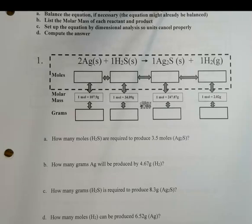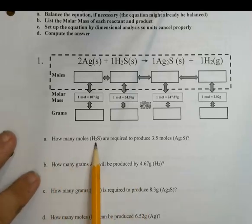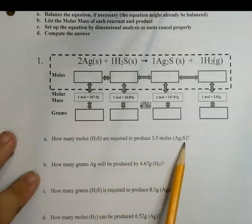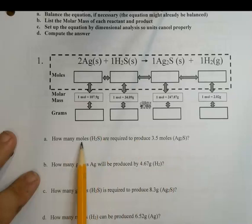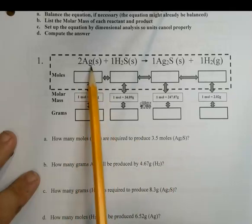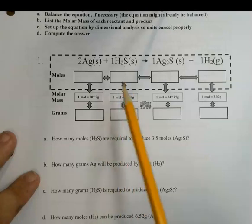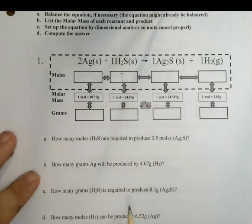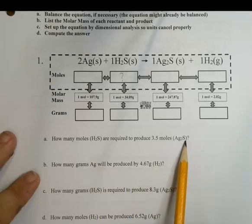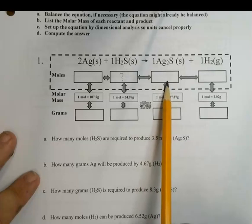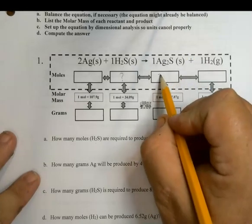So how do we solve these problems? You're going to start with two things: something the problem is asking you for, and an amount of something it gives you to start with. Let's read the first question: how many moles of H₂S are required to produce 3.5 moles of Ag₂S? The question is asking for moles of H₂S, so first find H₂S — it has two boxes, one for moles, one for grams. The one we're interested in is moles of H₂S, so we put a question mark there. It says 3.5 moles of Ag₂S, so we come over to Ag₂S and write 3.5 inside that box.